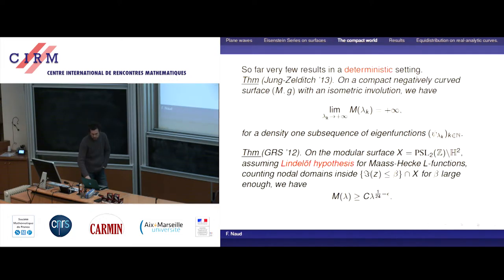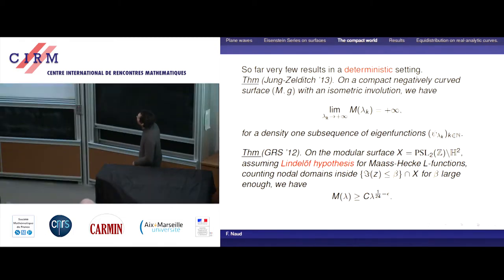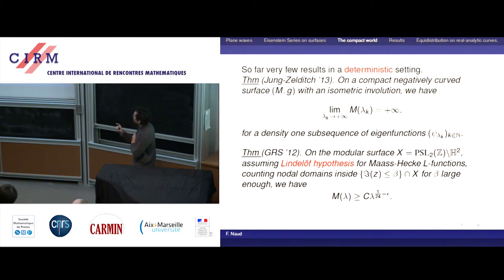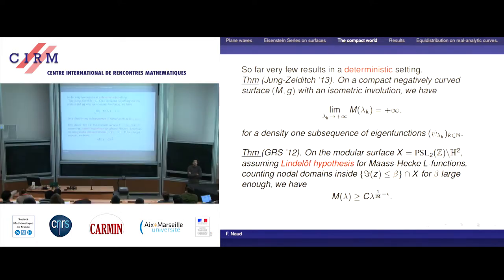If you look at random combinations of spherical harmonics or random combinations of eigenfunctions on the flat torus, you can compute the expectation of the number of nodal domains. This is the result of Nazarov–Sodin for the sphere, and then there was a result by Rudnick and Bourgain on the torus. On average the expectation of the number of nodal domains is lambda squared — there is even an asymptotic. But in a deterministic setting there are no better results. Probably the best deterministic result so far is due to Jung and Zelditch.